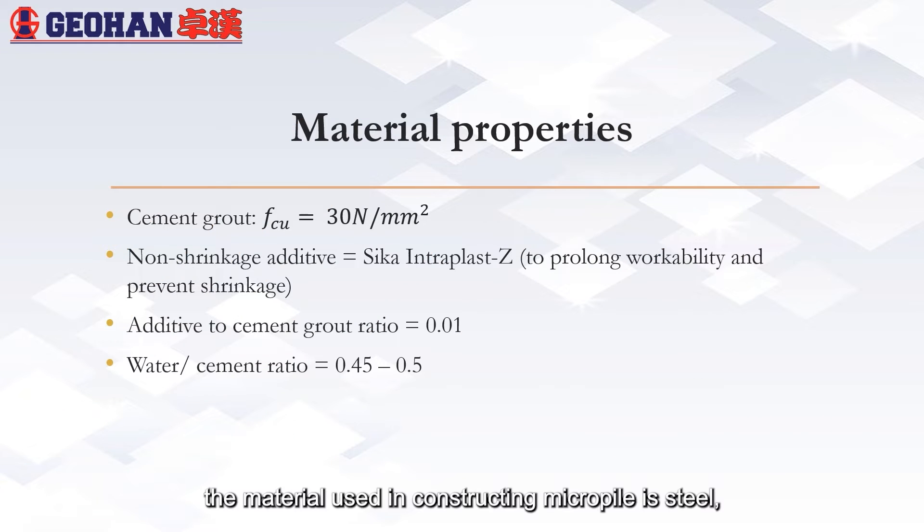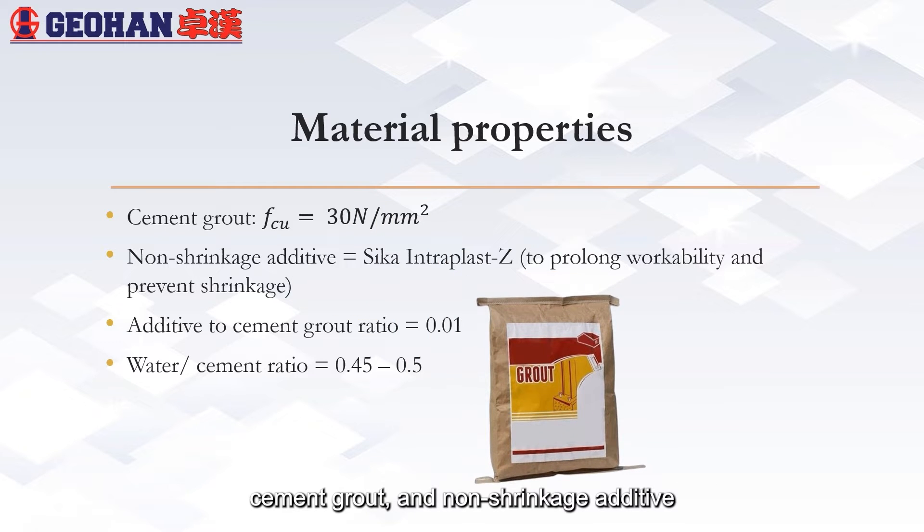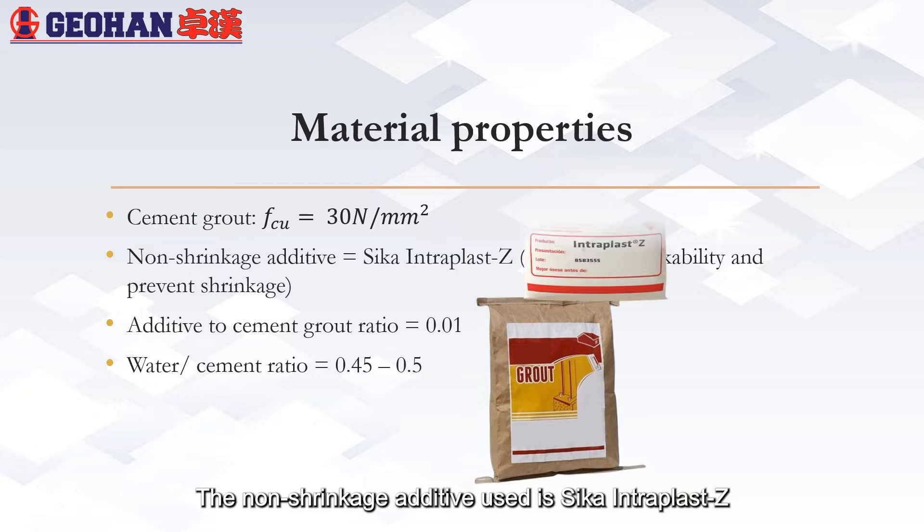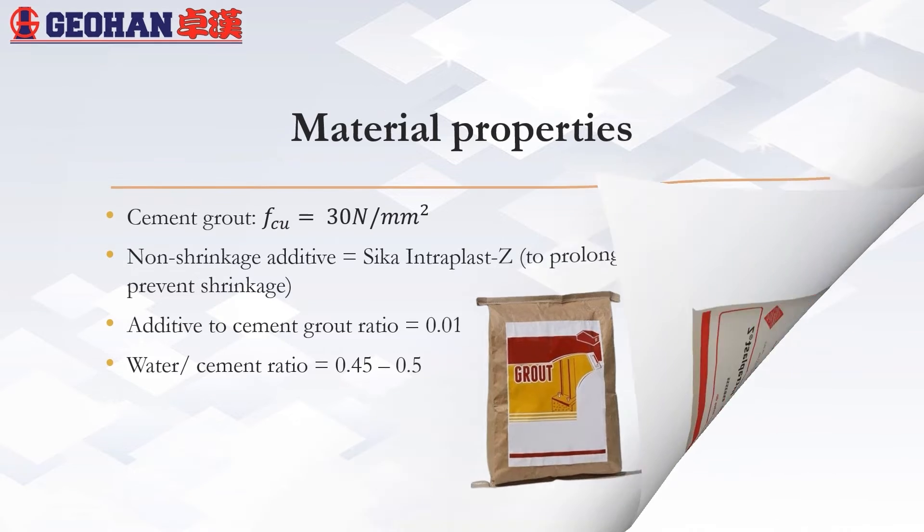Firstly, the material used in constructing MicroPile is steel, cement grout and non-shrinkage additive. The compressive strength of cement grout applied is 30 N per mm square. The non-shrinkage additive used is Sika Intrapass Z. The additive added to cement grout is in the ratio of 0.01. Water to cement ratio is in the range of 0.45 to 0.5.